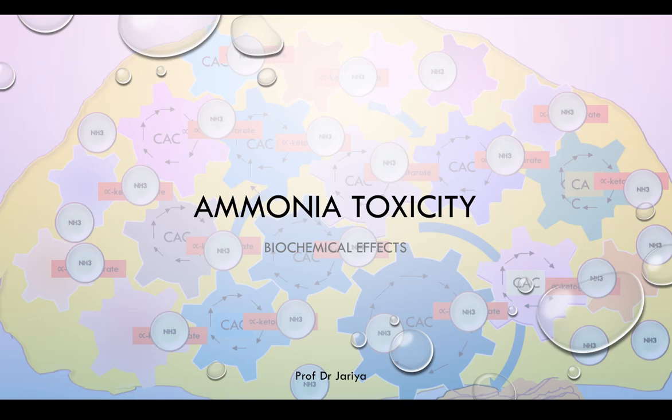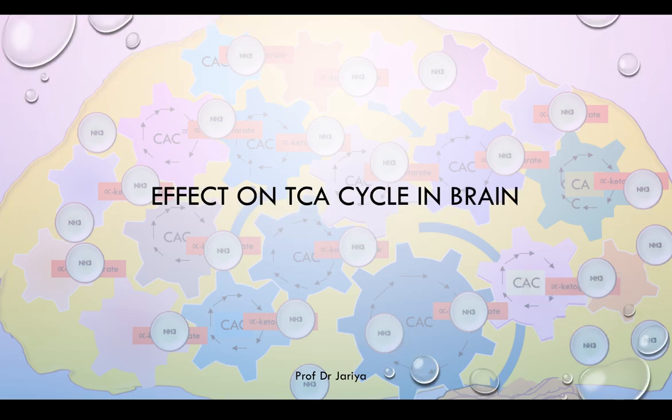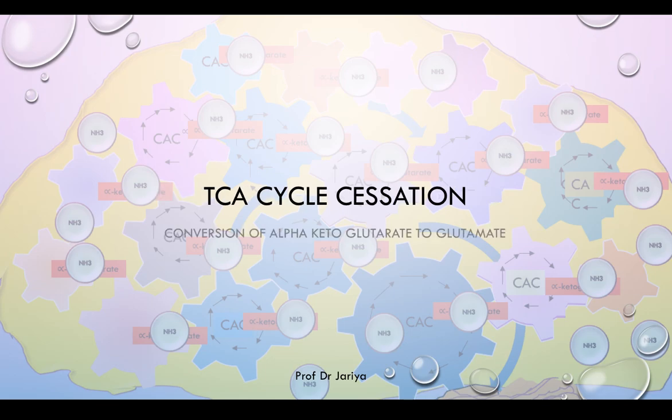Ammonia is toxic to the brain. It exerts its biochemical effects by causing the cessation of the TCA cycle in the brain, by leading to the depletion of the neurotransmitter glutamate, by causing cerebral edema due to accumulation of excess amounts of glutamine and ammonia itself, and finally by causing cell death. Let's see these effects one by one.